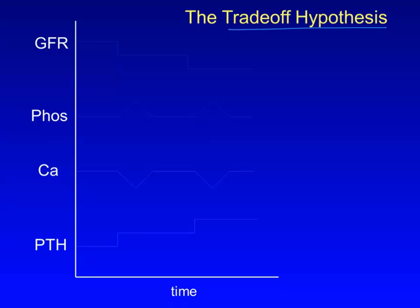Think of CKD as occurring in a series of little decrements in GFR. Each decrease in GFR leads to a small increase in serum phosphate because of less excretion, and then to a decrease in serum calcium. The exact mechanism of this reciprocal decrease in calcium wasn't known back in the 50s, so we'll get to that later.